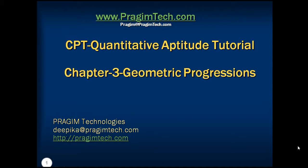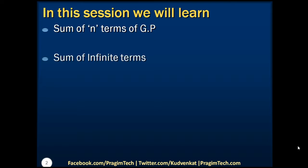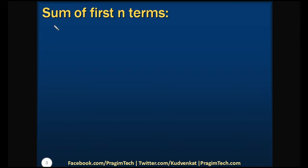Hello everyone. This is part 3 of geometric progressions. Please refer to previous parts of the tutorial before proceeding. In this session, we will learn how to find the sum of n terms of a geometric progression and how to find the sum of infinite terms of a geometric progression. We will also solve one example question based on this concept. Let us see how to find the sum of n terms of a geometric progression.